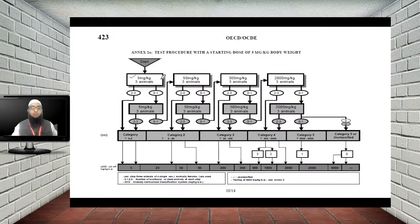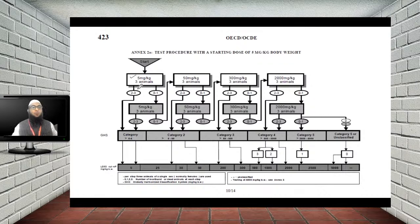Starting with 5 mg/kg given to three animals: if there is death or signs of morbidity or toxicity in two to three of those animals — meaning 50% or more show toxicity or death — then the drug is categorized as having toxicity between 0 to 5 mg/kg.